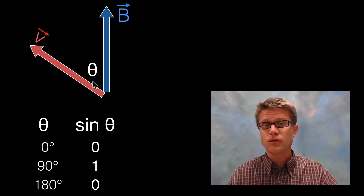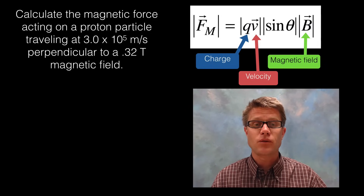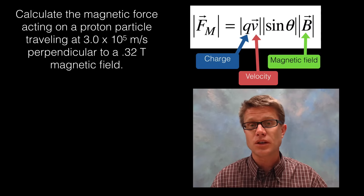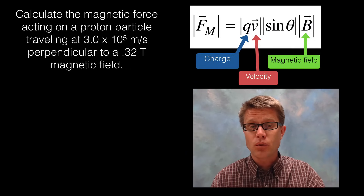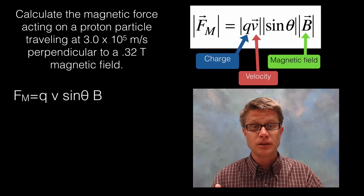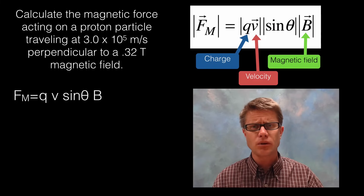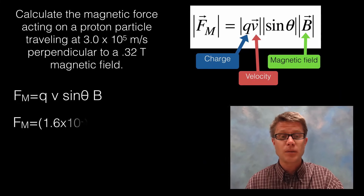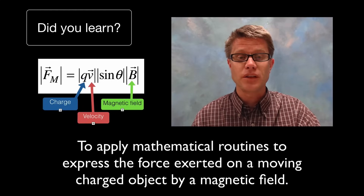Let's do a problem: calculate the magnetic force acting on a proton traveling at 3.0 × 10⁵ meters per second perpendicular to a 0.32 Tesla magnetic field. Start with the equation: F = QV sin(θ)B. We know B = 0.32 T, V = 3.0 × 10⁵ m/s, and since it's perpendicular sin(90°) = 1. The only thing left is Q, which is the elementary charge. Plugging that in, we get a very small force acting on that proton.